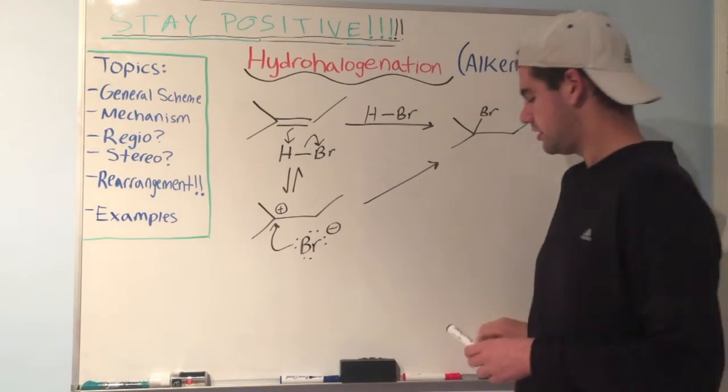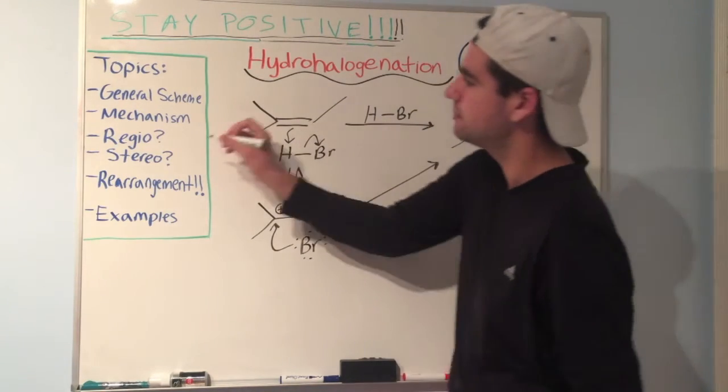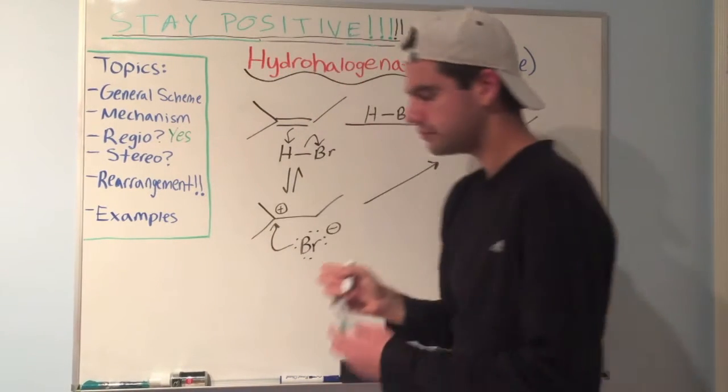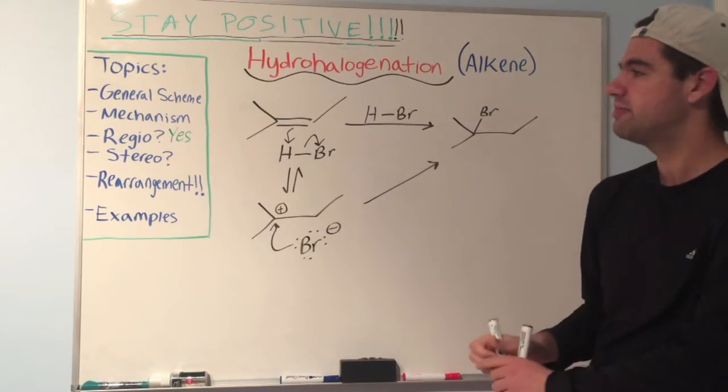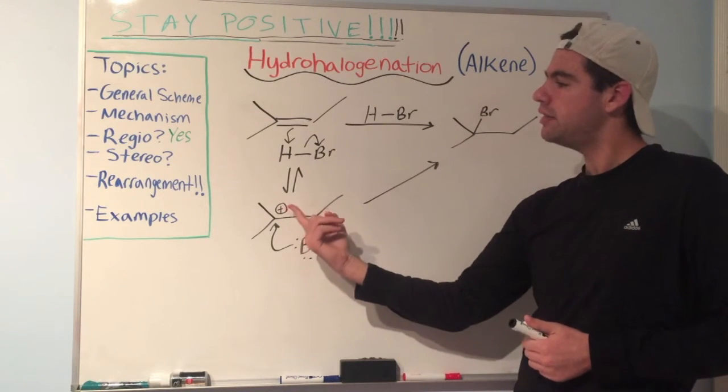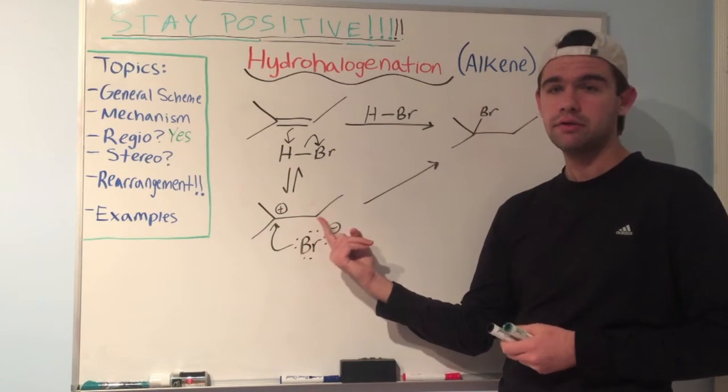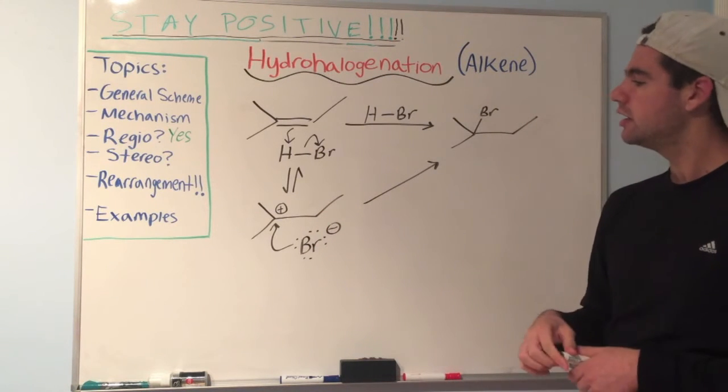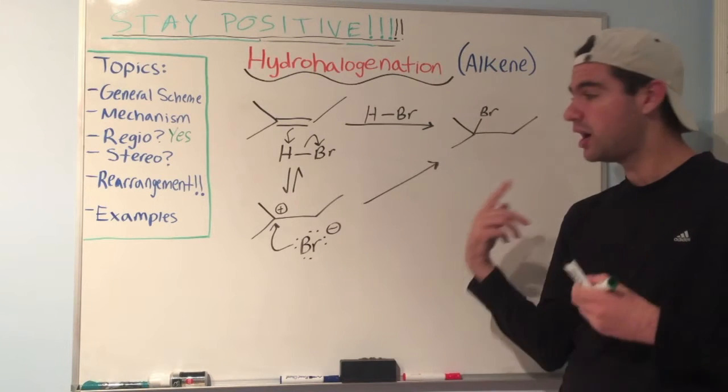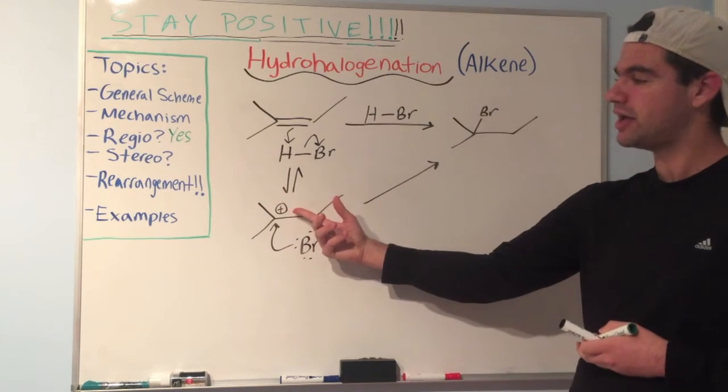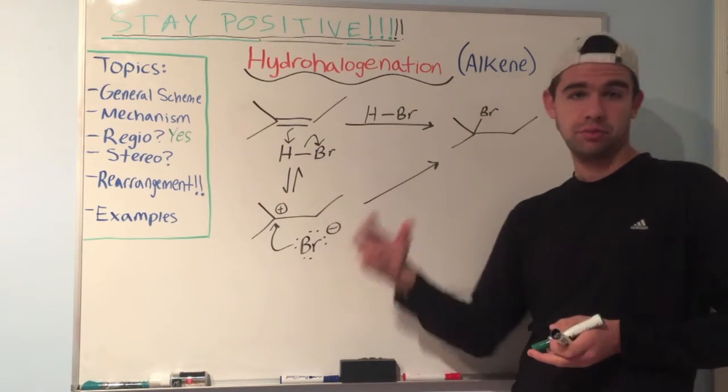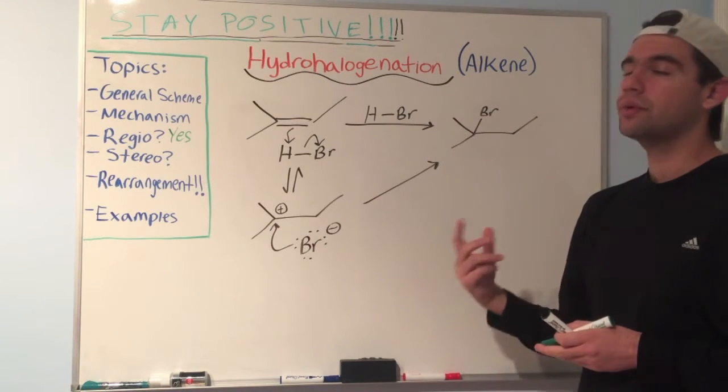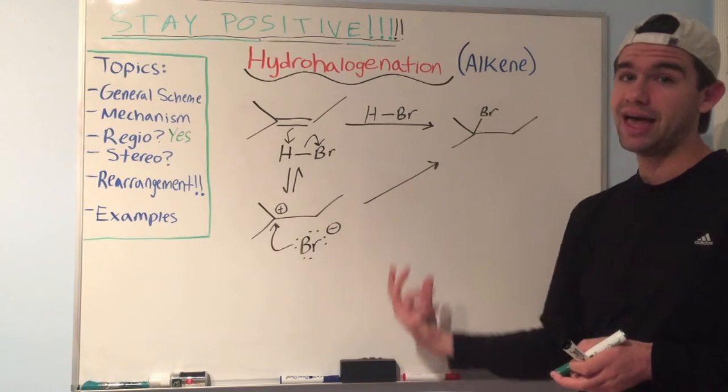So regiospecific, let's just write yes next to that. Now in terms of stereospecificity, we already know the answer to that. The fact that there's a carbocation formed in the mechanism means that there's no stereospecificity because this bromine, remember going back to SN1, anytime you have a carbocation, the nucleophile can attack from the front or the back, on top or on bottom.